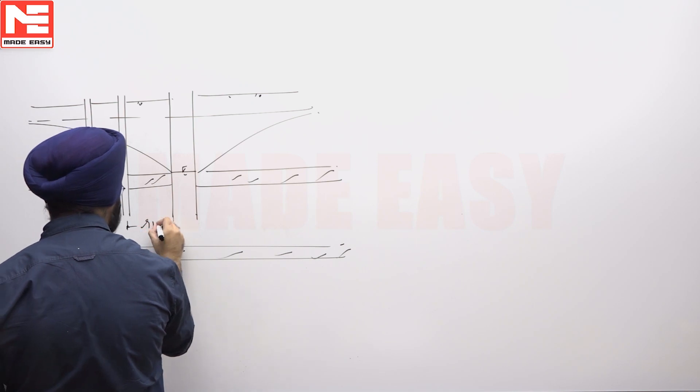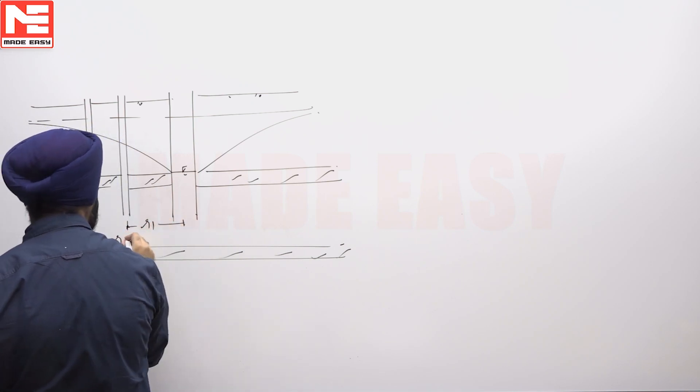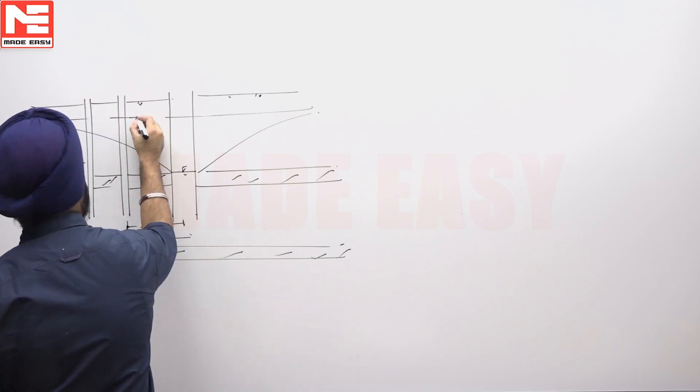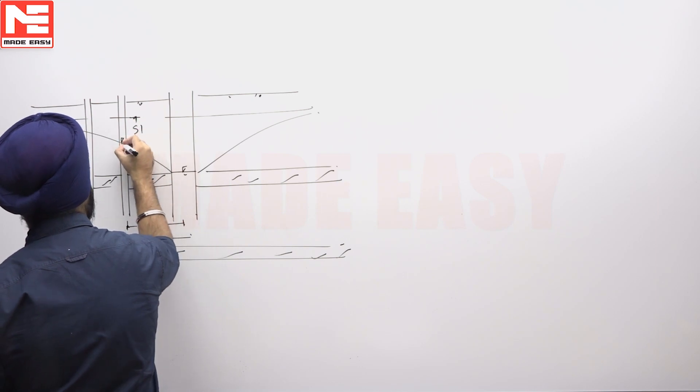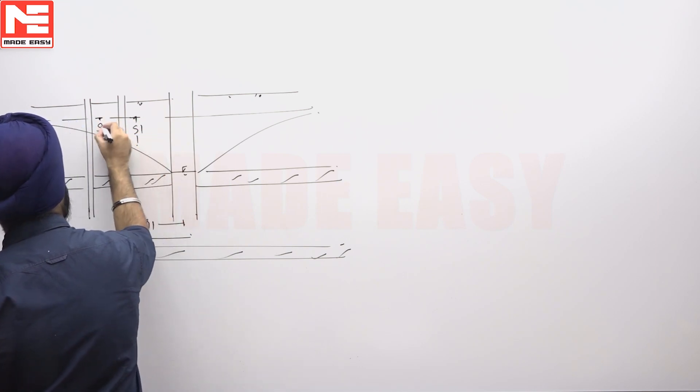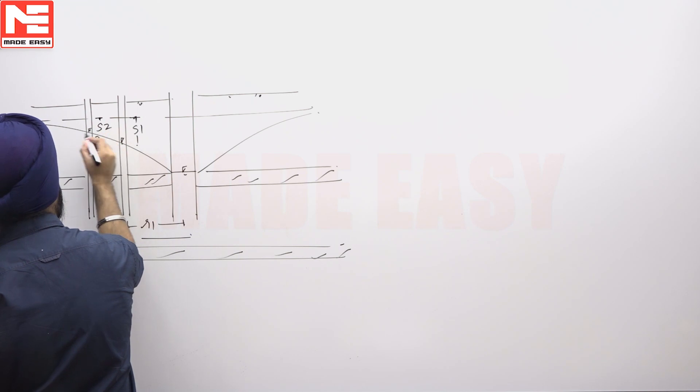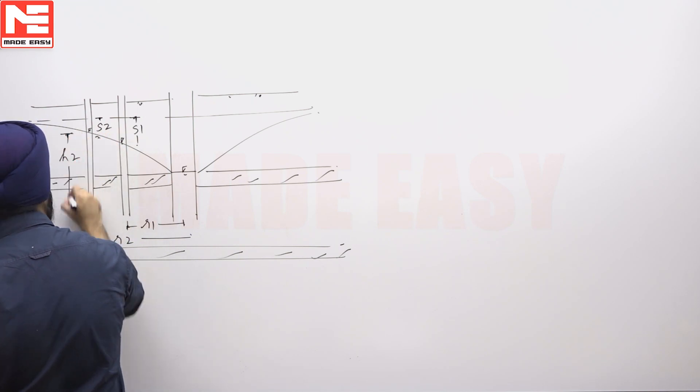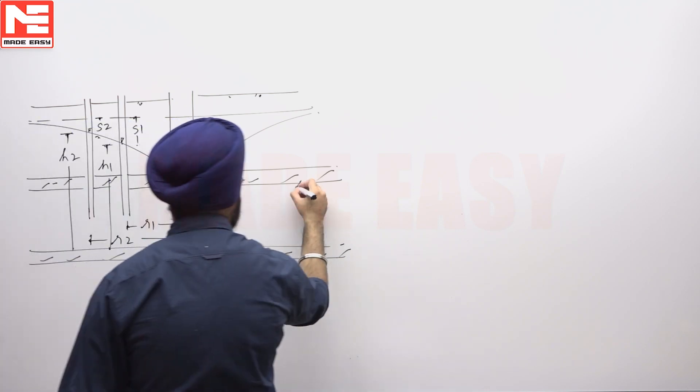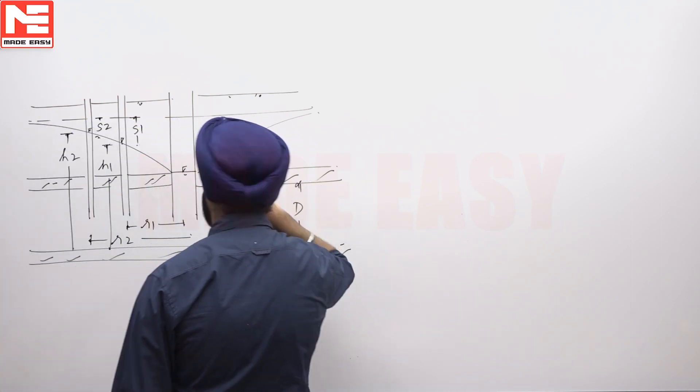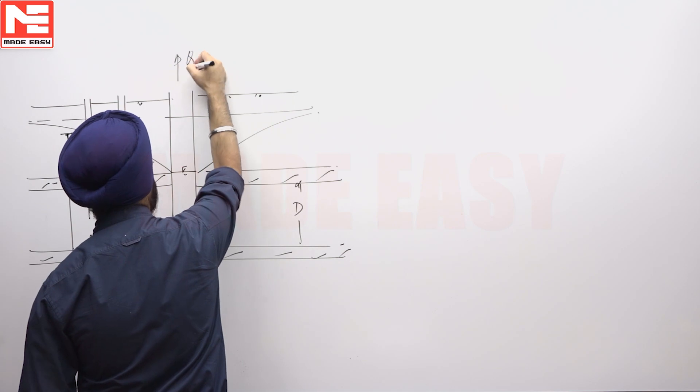Let us suppose the first well is at a distance of R1, second well is at distance R2. Drawdown is S1, here drawdown is S2. Height is H2, height of the water in this well is H1. Depth of the confining medium is D, water being pumped out is Q.